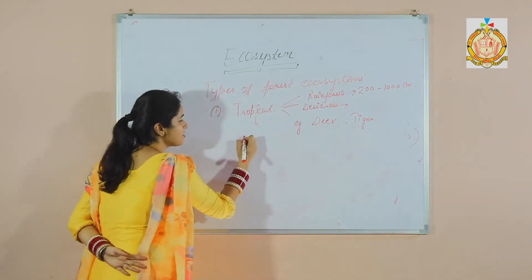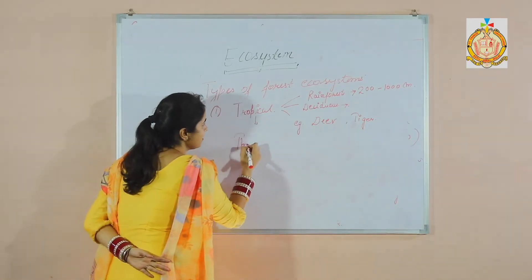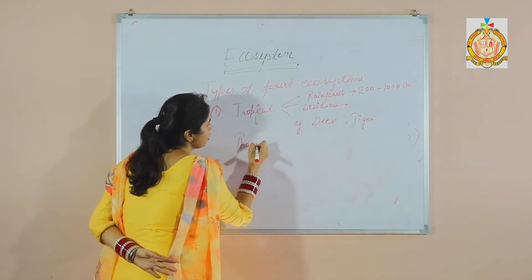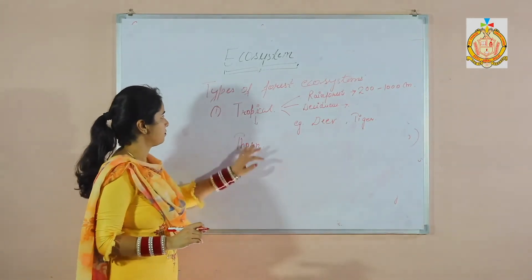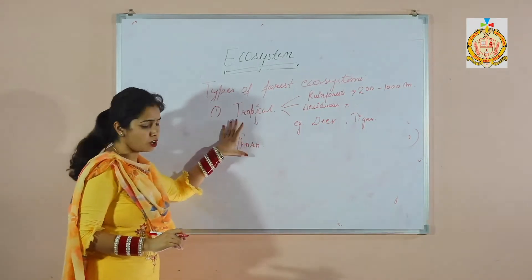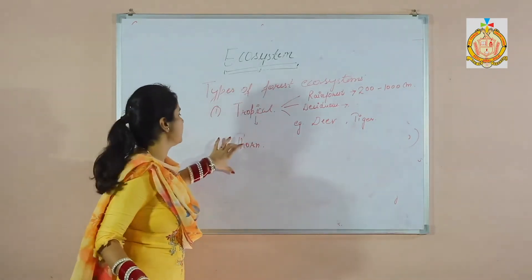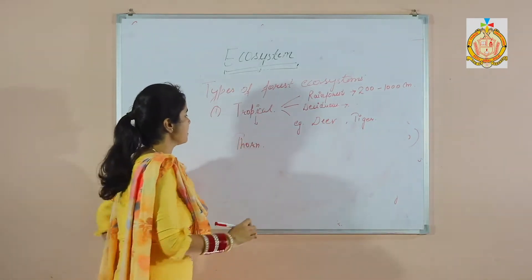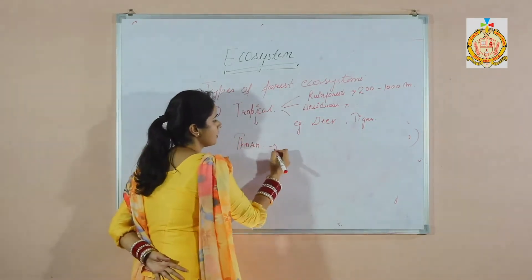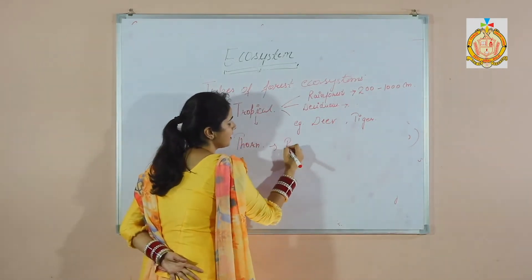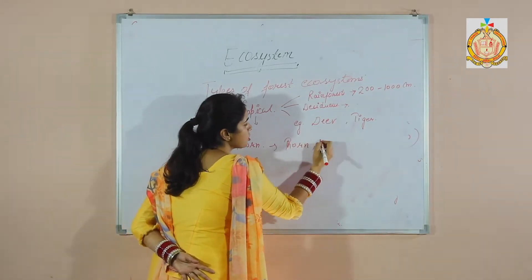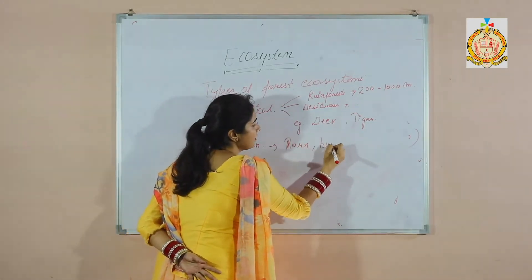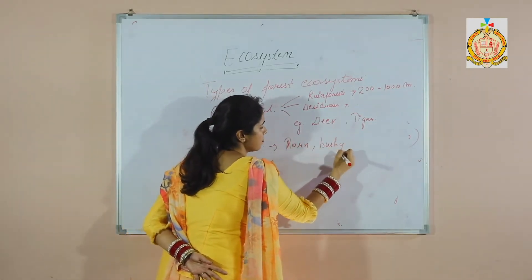The last type of tropical forest is the thorn forest. Here the plants have thorns, are bushy, and have shrubs.